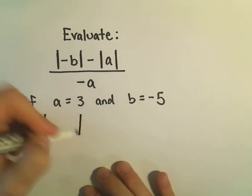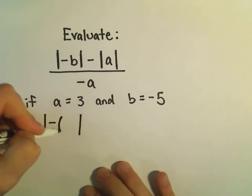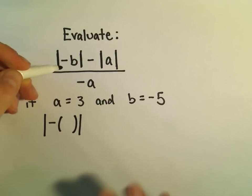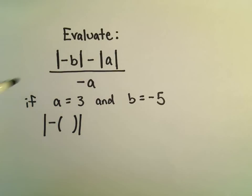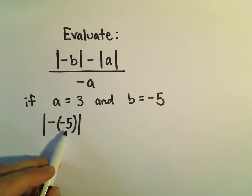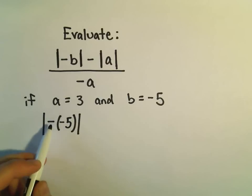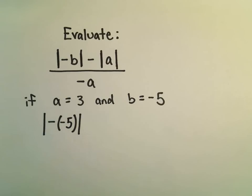So we've got the absolute value of negative b. In general, when I substitute, I like to put things in parentheses. I found it keeps me from making mistakes. It ends up being good form, especially if you have lots of things to substitute, because you might have to distribute this negative sign.